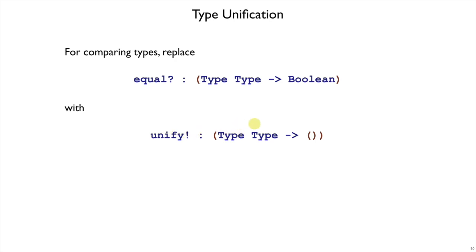Unify takes two types and makes sure that they're consistent with each other. If they're consistent, then it returns zero values. If they're inconsistent, then it raises a type error.